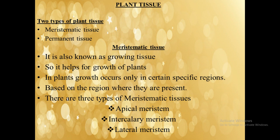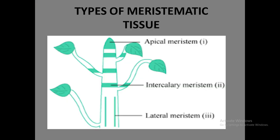Based on the region where they are present, meristematic tissue is divided into three types: apical meristem, intercalary meristem, and lateral meristem. Apical meristem is present at the tip of the stem and the tip of the root. It is responsible for the vertical growth of plants, also known as primary growth.